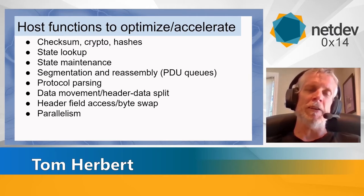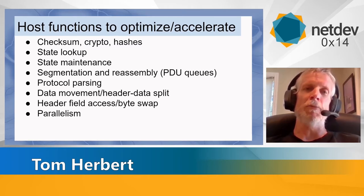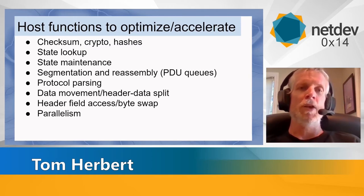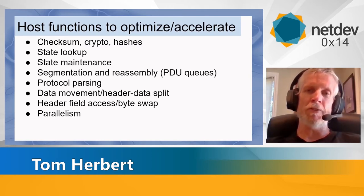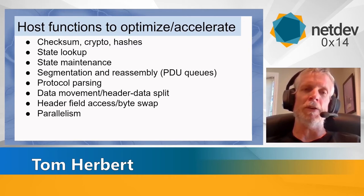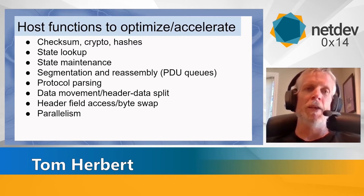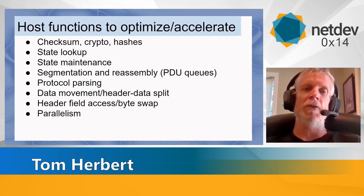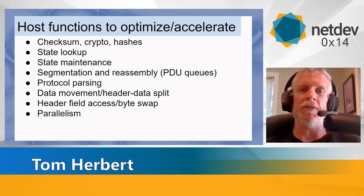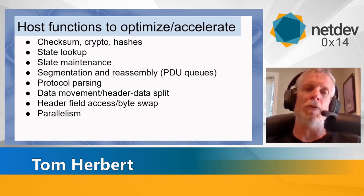State maintenance follows from state lookup — once we have state, we need ways to create it and remove it. As mentioned in the case of a SYN attack, this can be considered a fast path operation. Segmentation and reassembly is also important, especially when dealing with messages in TCP, as shown in the iWARP example. Processes that automate reassembly, provide quickly-accessed queues, and handle timers for reassembly are all part of the mechanics.